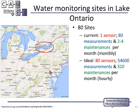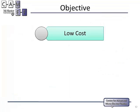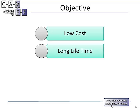If we're doing one-spot sensing that's manageable, but imagine we want to monitor a big water system like Lake Ontario. What Canada's government currently does is have one sensor doing 80 measurements with two to four maintenance visits per month to get monthly data — which is insufficient. Ideally we want hourly data. To do that, we'd need 80 expensive sensors doing 54,600 measurements and 320 maintenance visits, which would cost enormous amounts of money our government is not willing to support.